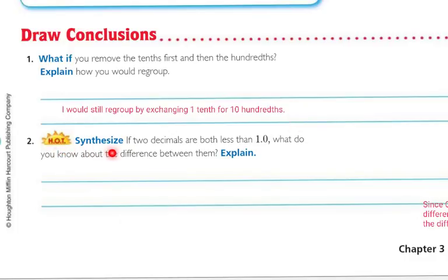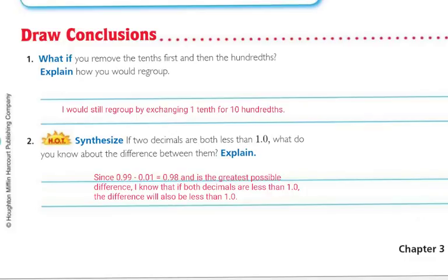Hot problem — synthesize. Two decimals are both less than 1.0. What do you know about the difference between them? Explain. Since 0.99 minus 0.01 equals 0.98, that's the greatest possible difference if they're both less than 1. So I know that if both decimals are less than 1.0, then the difference is also going to be less than 1.0, based on the greatest problem I could possibly make.